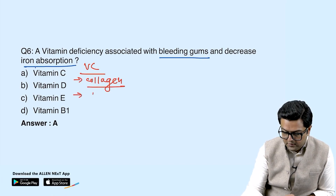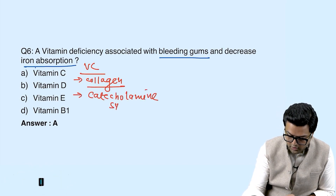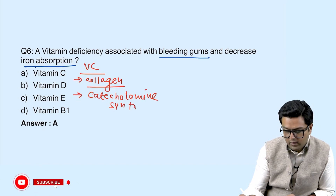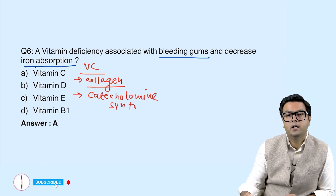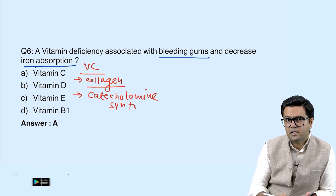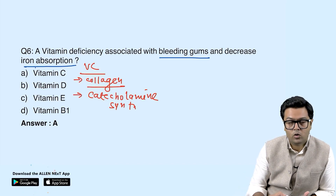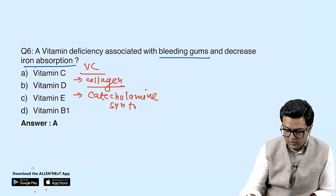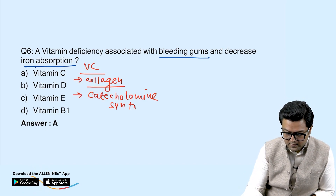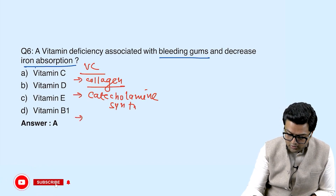Second, vitamin C is required for catecholamine synthesis — that includes norepinephrine and dopamine. This synthesis occurs in the adrenal glands, which have the highest amount of vitamin C in our body.